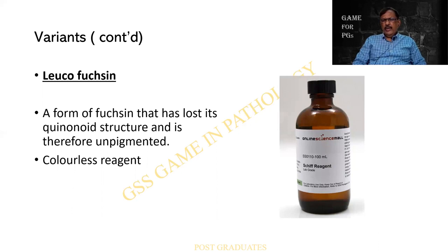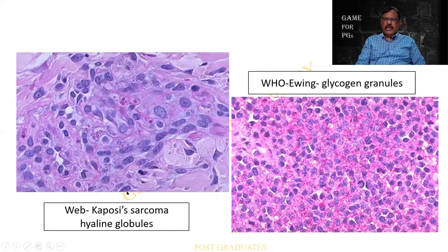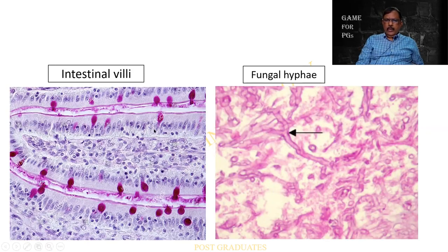This is the Schiff's reagent — look at the color of the bottle in which it is prepared and stored. Leuco means white or colorless, which is why it is called so. Some applications of PAS: here I am finding globules in the cytoplasm in a case of Kaposi's sarcoma — I hope you appreciate the magenta-colored globules. When diagnosing a small round cell tumor, do a PAS: if it is granular and positive, it can turn out to be Ewing's sarcoma — correlate with clinical and radiological pictures.